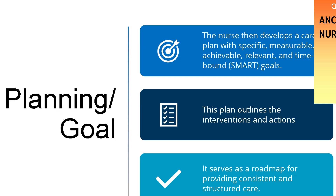Plan or goal: the patient had pain in the calf, the nursing diagnosis is acute pain. What's your plan? Your plan is that this patient doesn't have any more pain by the end of the shift or by discharge. That's the goal. The goal should be SMART, meaning it should have a timeframe. This goal serves as a roadmap to where you want to go. You must be able to identify what is an assessment, what is a nursing diagnosis, and what is a goal.